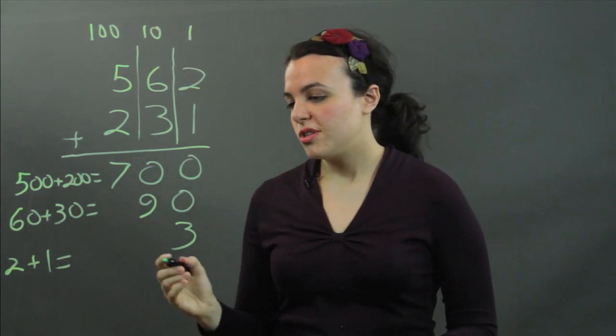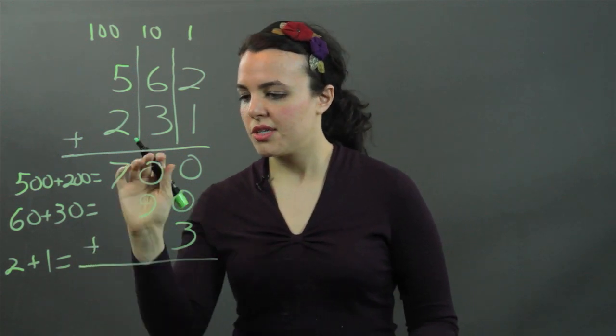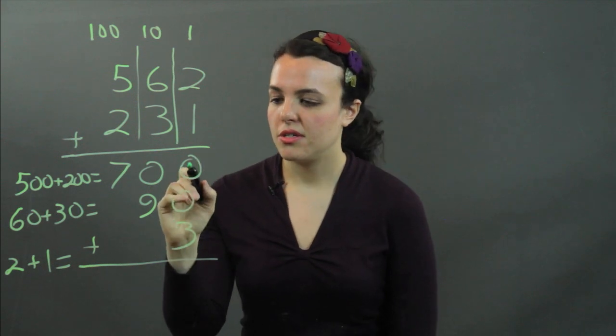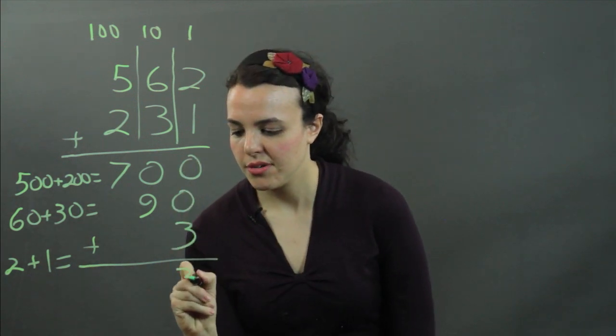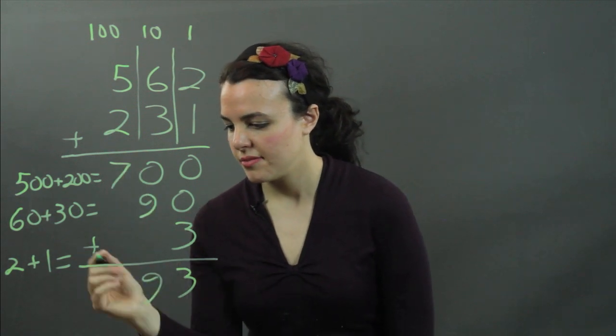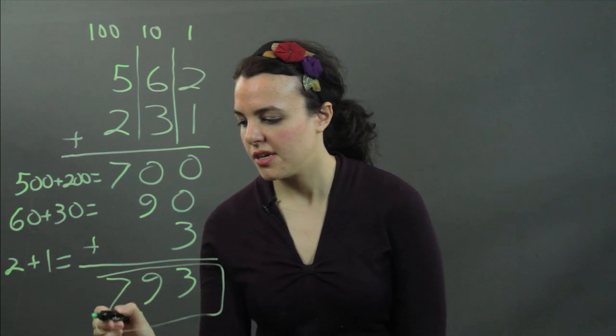Now, to finish this off, we add these three numbers using old-fashioned addition. 0, 0, and 3 add to 3. 0 and 9 add to 9. 7 is 7. And that is our answer, 793.